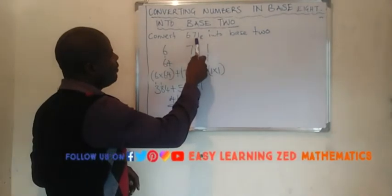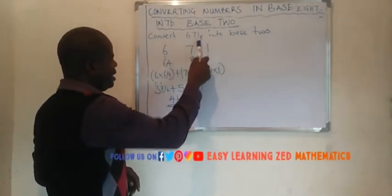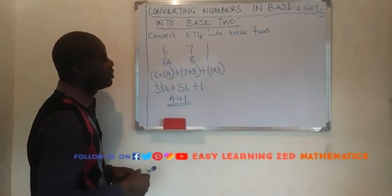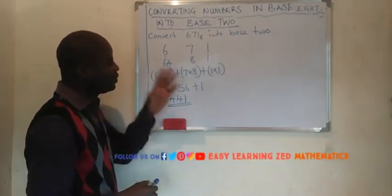So 6, 7, 1 base 8 in base 10 is 441. Now let's convert this one into base 2.